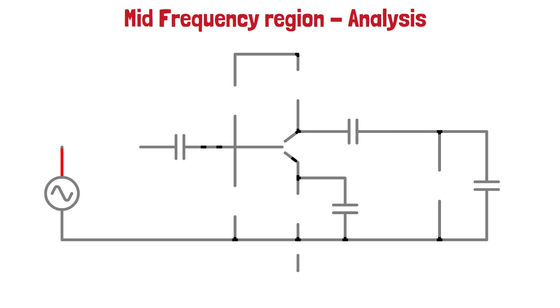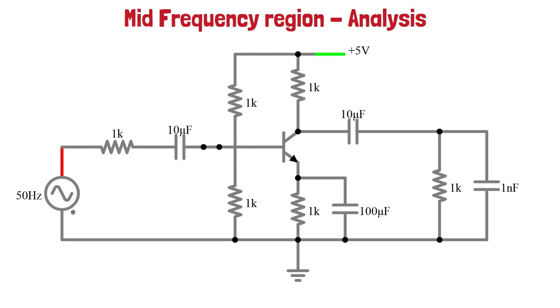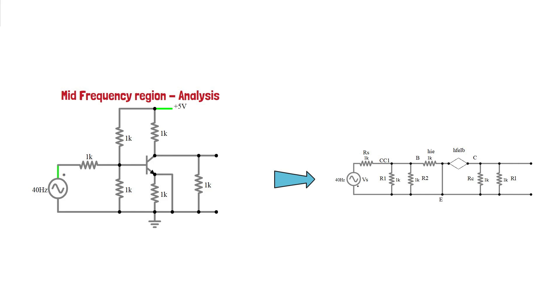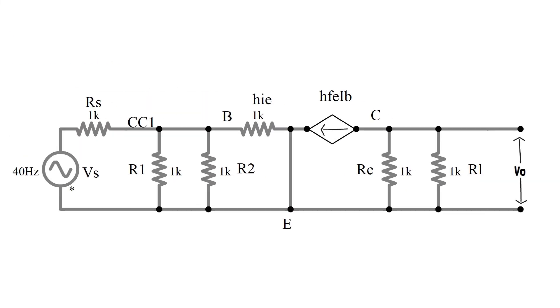Now let's see the analysis of mid frequency region. In mid frequency region, the microfarads are short circuited and picofarads are open circuited. For AC analysis, short circuit the DC voltage source. Replace BJT with approximate hybrid model and we will redraw it.